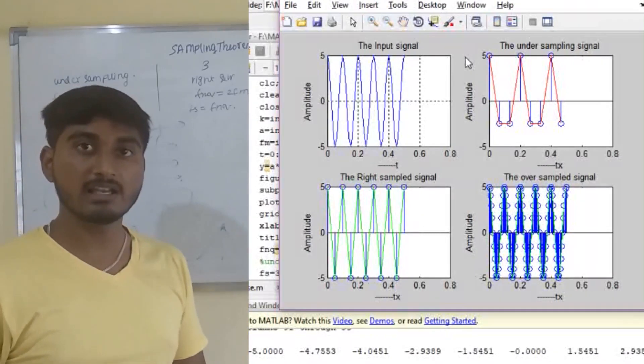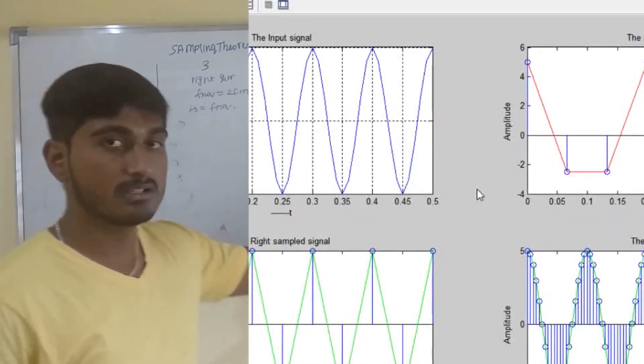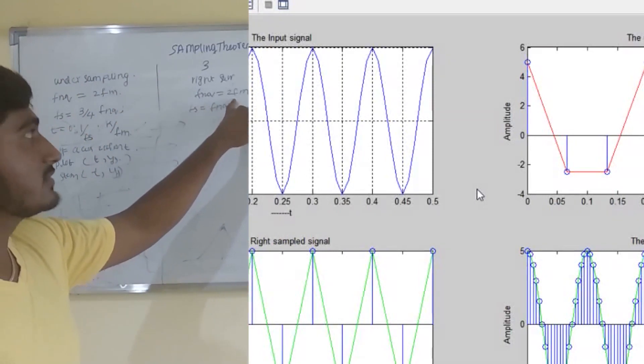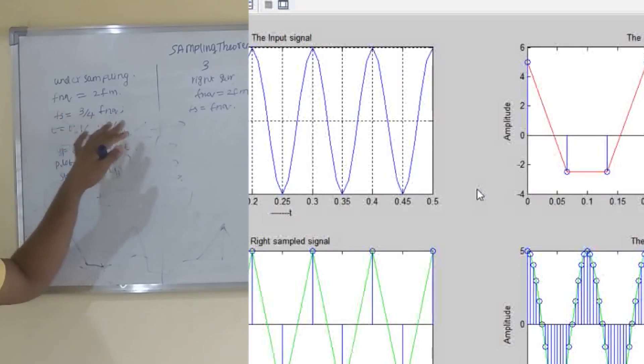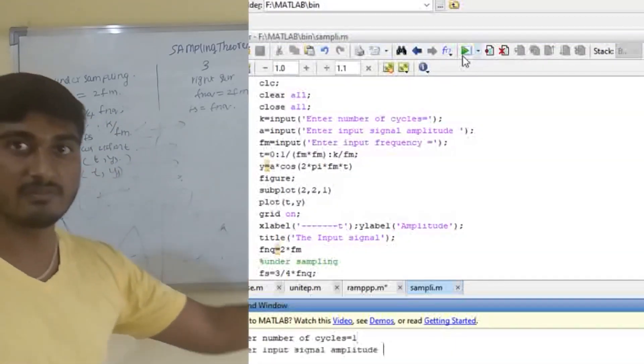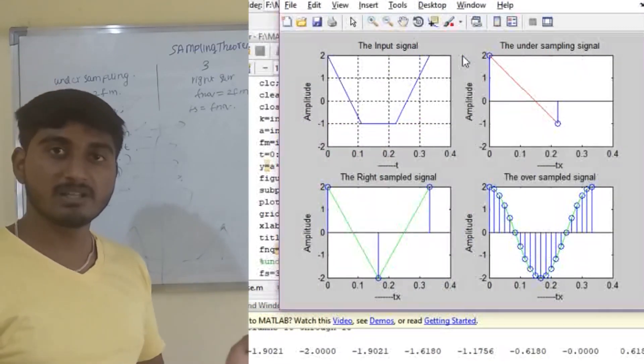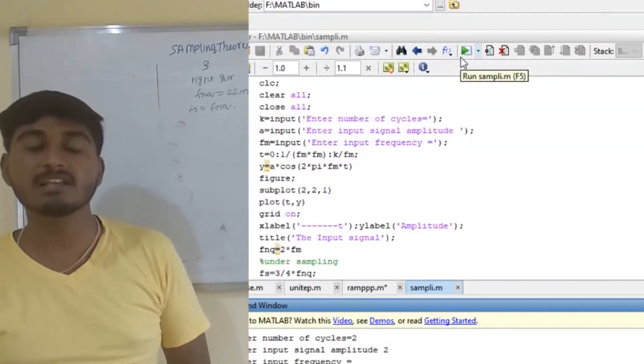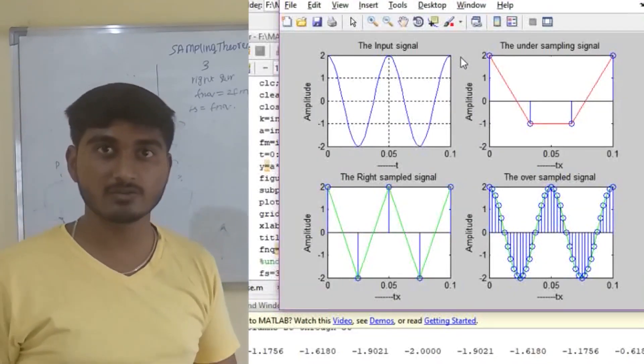That's it guys. Finally, what I would like to tell is, this will be divided into three types. For right sampling, Fnq equals 2Fm. For oversampling, 10 times Fnq. If it is less than like 3 by 4 Fnq, in this state, the graph defined will be different. That's why this sampling theorem is proved. If you like my video, please give me a thumbs up. If you want more videos like this, please subscribe to my channel. Thank you.